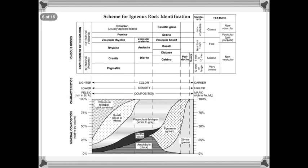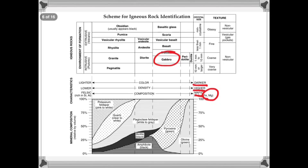You'll see vocabulary words like mafic and felsic — those are important. Some of the rock names are on the top. For example, gabbro would be a dark rock, higher density, and mafic, which means it has iron and magnesium in it, because it's on that side of the table. If we look at granite, it's on the left side, so it would be a lighter color, lower in density, and a felsic rock rich in silicon and aluminum.